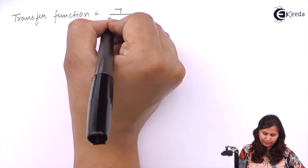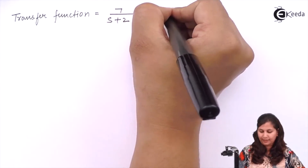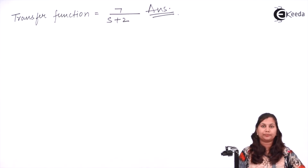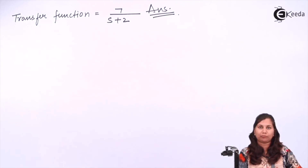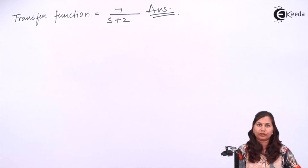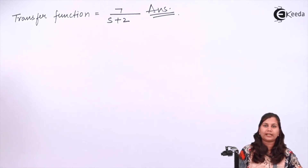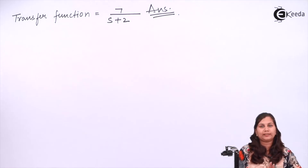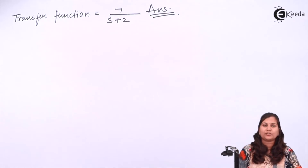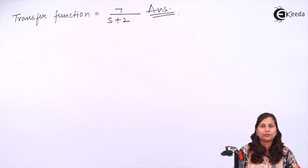So our transfer function is 7/(s+2) and this is our answer. In this problem we have obtained the transfer function of the system using the state model. We calculated sI minus A inverse, and A, B, C, D were already given in the question from the state model. Just calculate the sI minus A inverse and put it in the transfer function formula and you can easily calculate the transfer function of the system. I hope this problem is clear to you. Thank you.